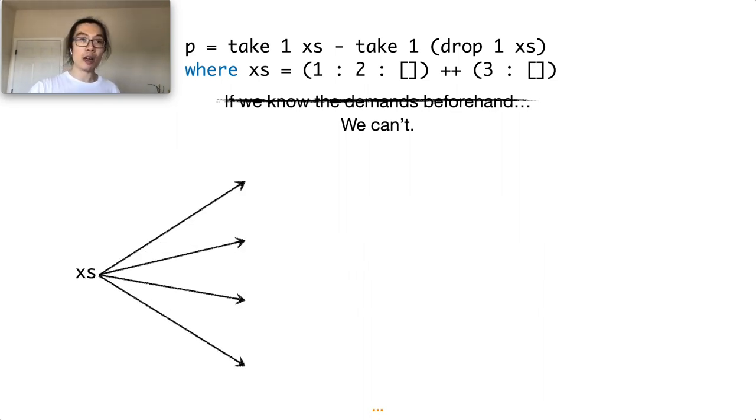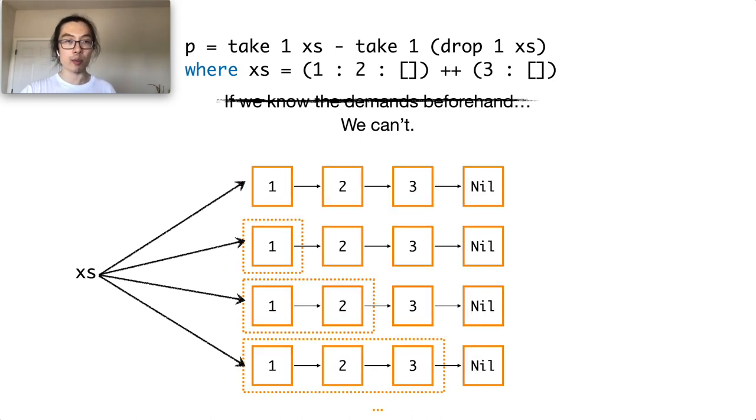So when we evaluate xs, we fork the computation into multiple different branches, each branch with a different demand. And during the evaluation of the entire program, some of these branches would result in failure, because the conjectured demands on these branches are not sufficient.